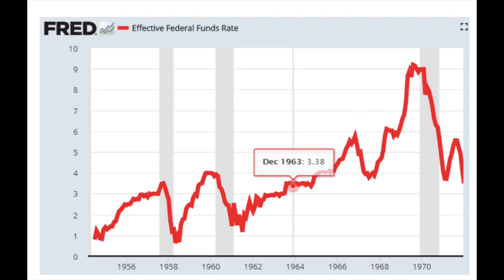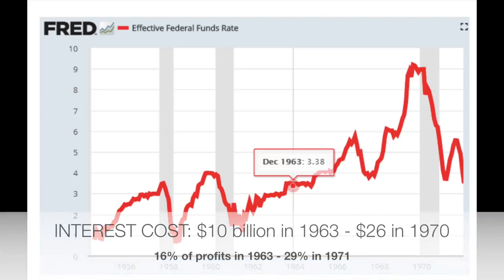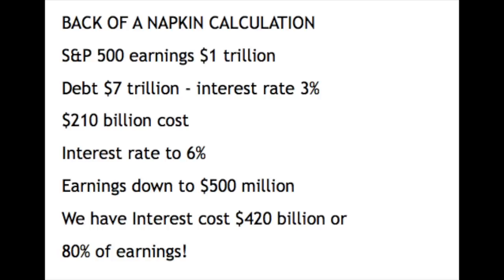Interest payments on corporate debt went from 10 billion in 1963 to 26 billion in 1970. By 1971, interest payments were taking 29% of corporate profits, compared to just 16% in 1963. Where we are now, back-of-a-napkin calculation, corporate interest payments should be around 280 billion. S&P 500 earnings are 1 trillion, so we are at 30%. If interest rates double, earnings go down and interest payments go up — we could soon see US corporations paying 100% of their profits into debt repayments.